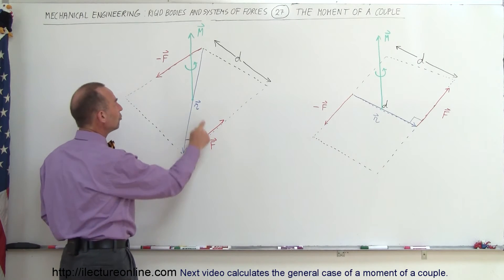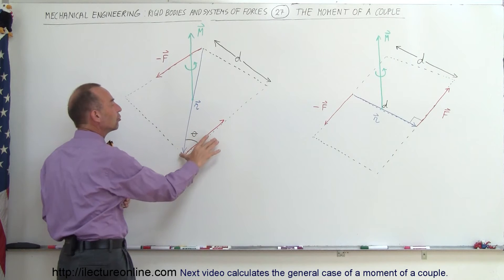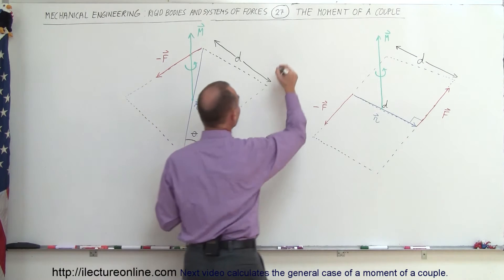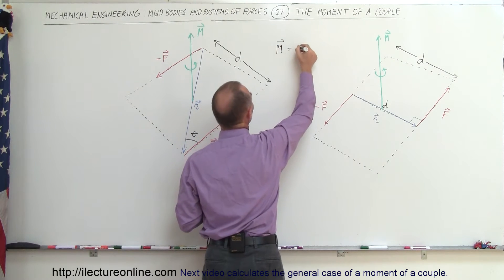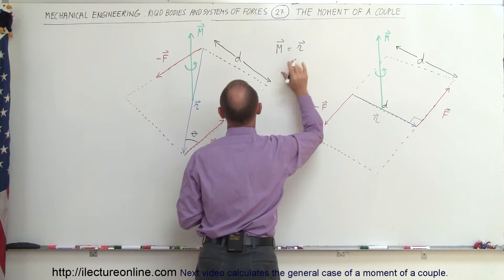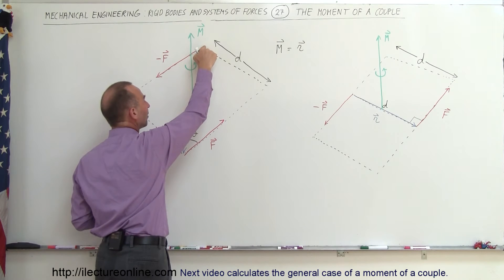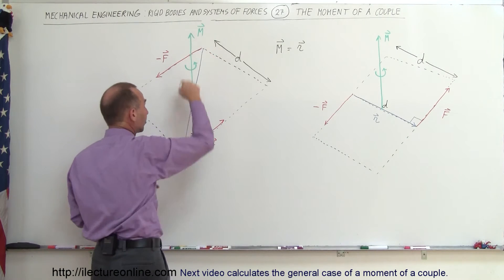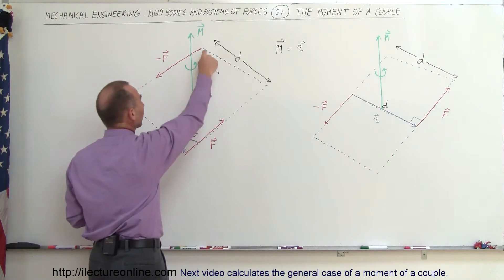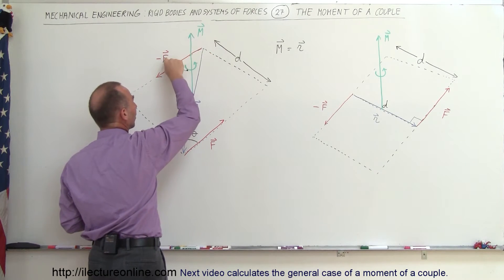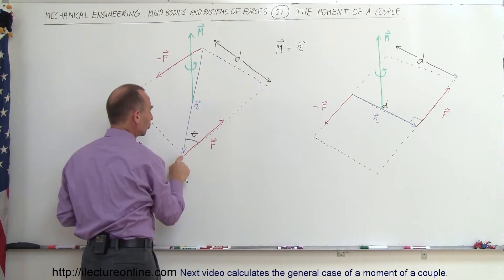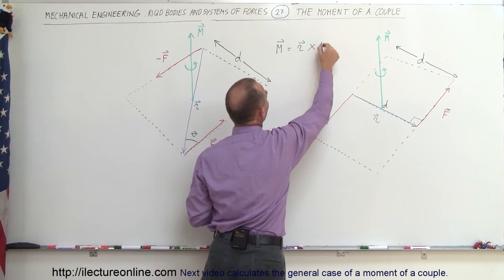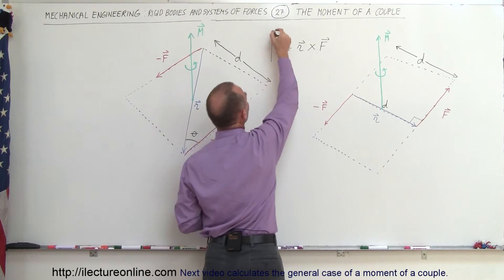The two forces that are opposite in direction and equal in magnitude have a certain distance between them — we call that distance d. The moment can be defined as the vector product, the cross product, of the position vector from the start of one vector to the start of the other vector representing the two forces. We have a vector going from the point of the start of the negative force to the start of the positive force — we call that the r vector or position vector. If we multiply that vector times the magnitude of the force, that will be the definition of the moment.